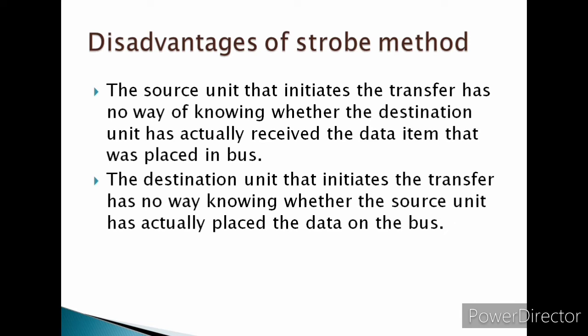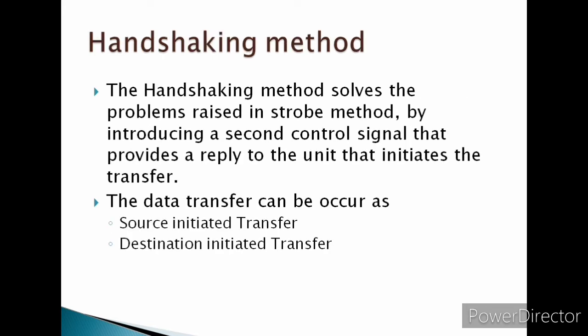To avoid this problem, we must use the handshaking method of data transfer. The handshaking method solves the problems raised in the strobe method by introducing a second control signal that provides a reply to the unit that initiates the transfer. The data transfer can occur as a source-initiated transfer or a destination-initiated transfer.